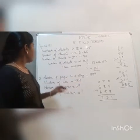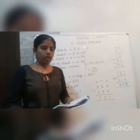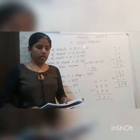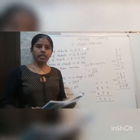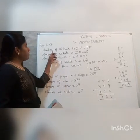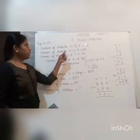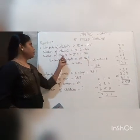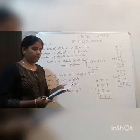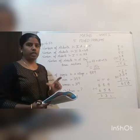The first problem: there are 55 students in class 2A, 48 students in class 2B, and 53 students in class 2C. How many students are there in all three sections? They have given us the number of students in 2A which is 55, number of students in 2B is 48, number of students in 2C is 53. They are asking how many students are there in all three sections.